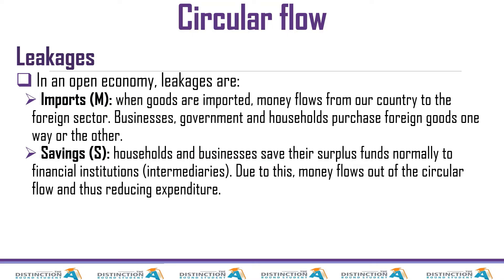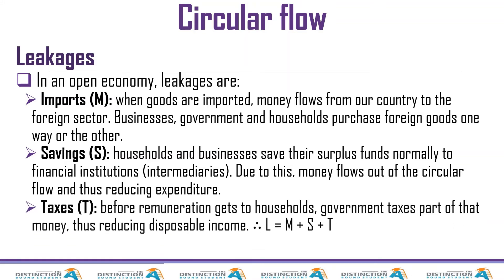The next leakage is savings — when we receive our disposable income, we save part of it, and that is a leakage because that money could have been circulating in the economy. Before we even receive our income, there is another leakage: taxes. When government taxes us, we see a reduction in money in circulation — our disposable income is less than what companies pay us. So we have: L for leakages equals M (imports) plus S (savings) plus T (taxes).